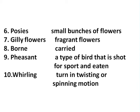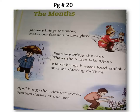Students, read the above words and try to understand their meanings according to context. Now I'm going to read page number 20 and then explain it to you. On page number 20, four couplets are given. A couplet means a stanza consisting of two lines of verse, usually rhymed or ending on the same sound. Now I'm going to read the poem. The name of the poem is 'The Months.'